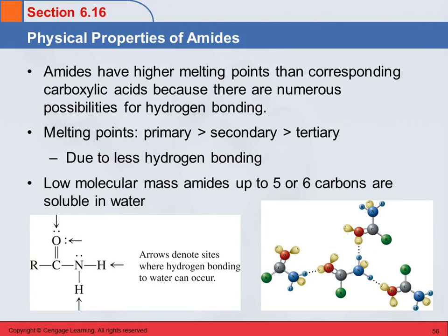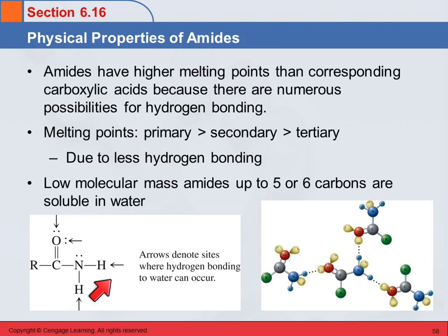Physical properties of amides — we'll compare them to the carboxylic acids. They're going to have higher melting points than the corresponding carboxylic acids because they have more possibilities for hydrogen bonding. The lone pairs on the oxygen can bond with hydrogens on other amide molecules, and we also have the hydrogens bonded to the nitrogen. So we have more places for hydrogen bonding between molecules, and the force of attraction is greater, therefore the boiling point and melting point is higher.